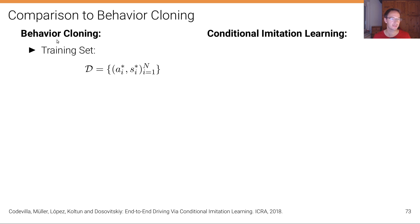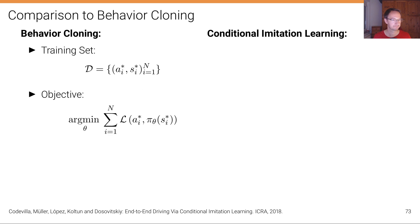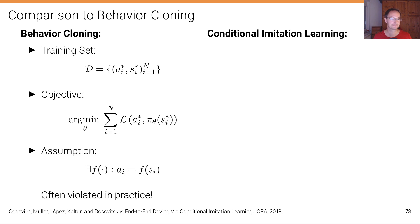In behavior cloning on the left, we have a training set of action-state pairs provided by the expert demonstrator for n frames. The objective is to minimize the loss — the difference between the expert action and the action returned by the policy for the corresponding state. The assumption is that there exists a function f that, given input s_i, returns a particular action a. This assumption is often violated in practice, for example at intersections where multiple actions are valid for a particular state.